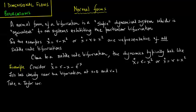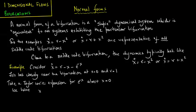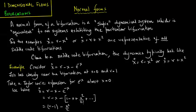We take a Taylor series expansion for e^(-x) about x = 0. So x_dot = r - x - e^(-x), which equals r - x minus expanding e^(-x): 1 - x + x²/2! + higher order terms, which simplifies to r - 1 - x²/2 plus higher order terms, which we ignore.